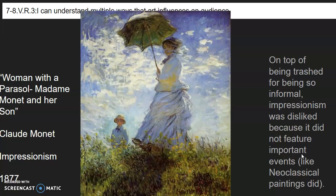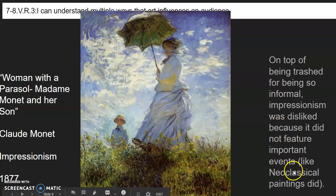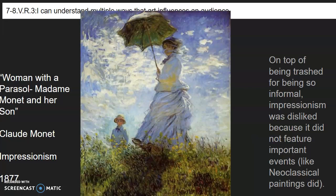Claude was obsessed with painting. This is his wife — Woman with a Parasol, Madame Monet and Her Son. In the movements before Impressionism, you were supposed to paint important things. Impressionism was disliked not just because people thought it looked ugly, but also because it didn't feature important people. There's an art movement called Neoclassical that focused on painting really important people like Napoleon and George Washington — Madame Monet was not exactly as important as them. So Impressionism was disliked because it looked unfinished, unrealistic, and didn't feature important people.